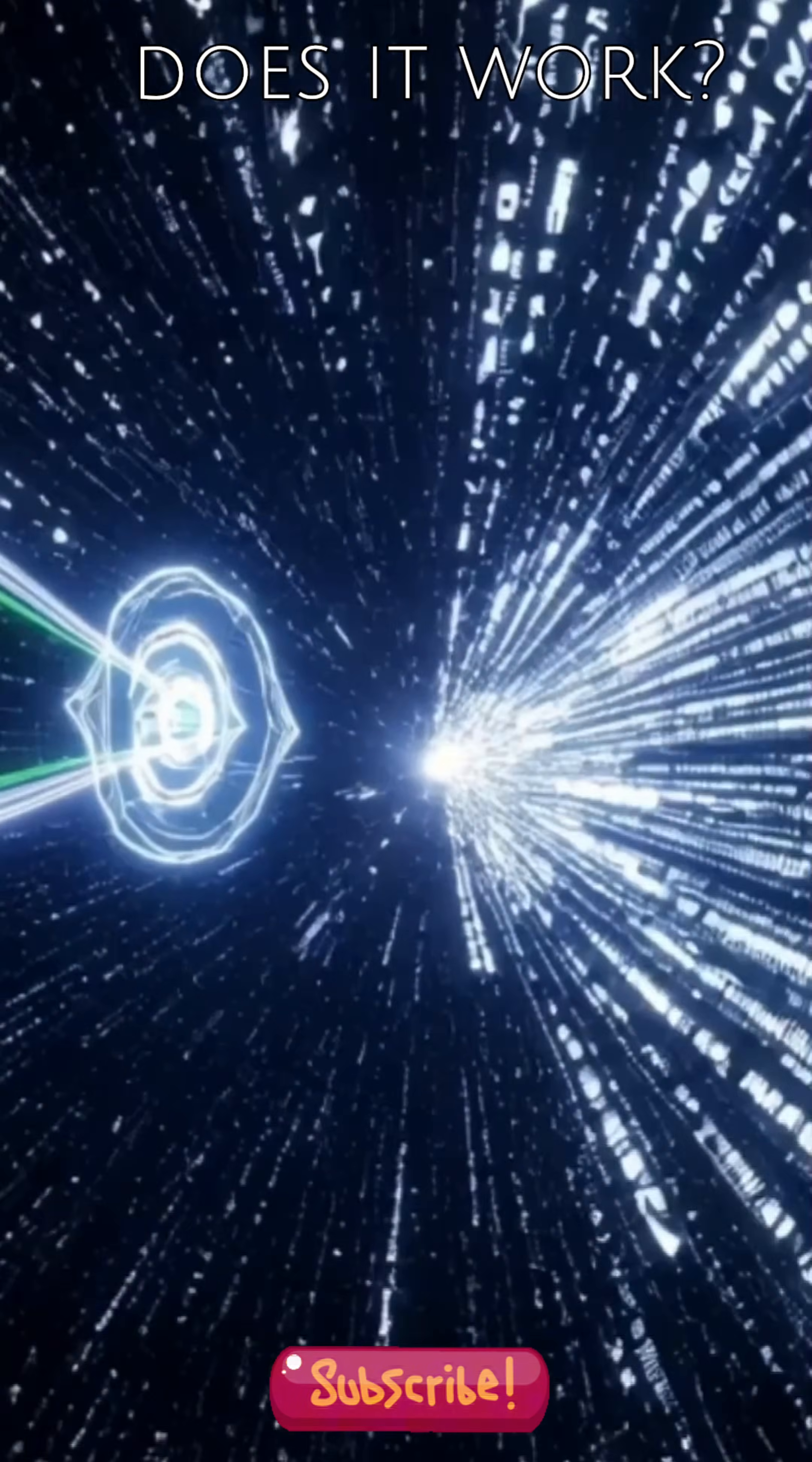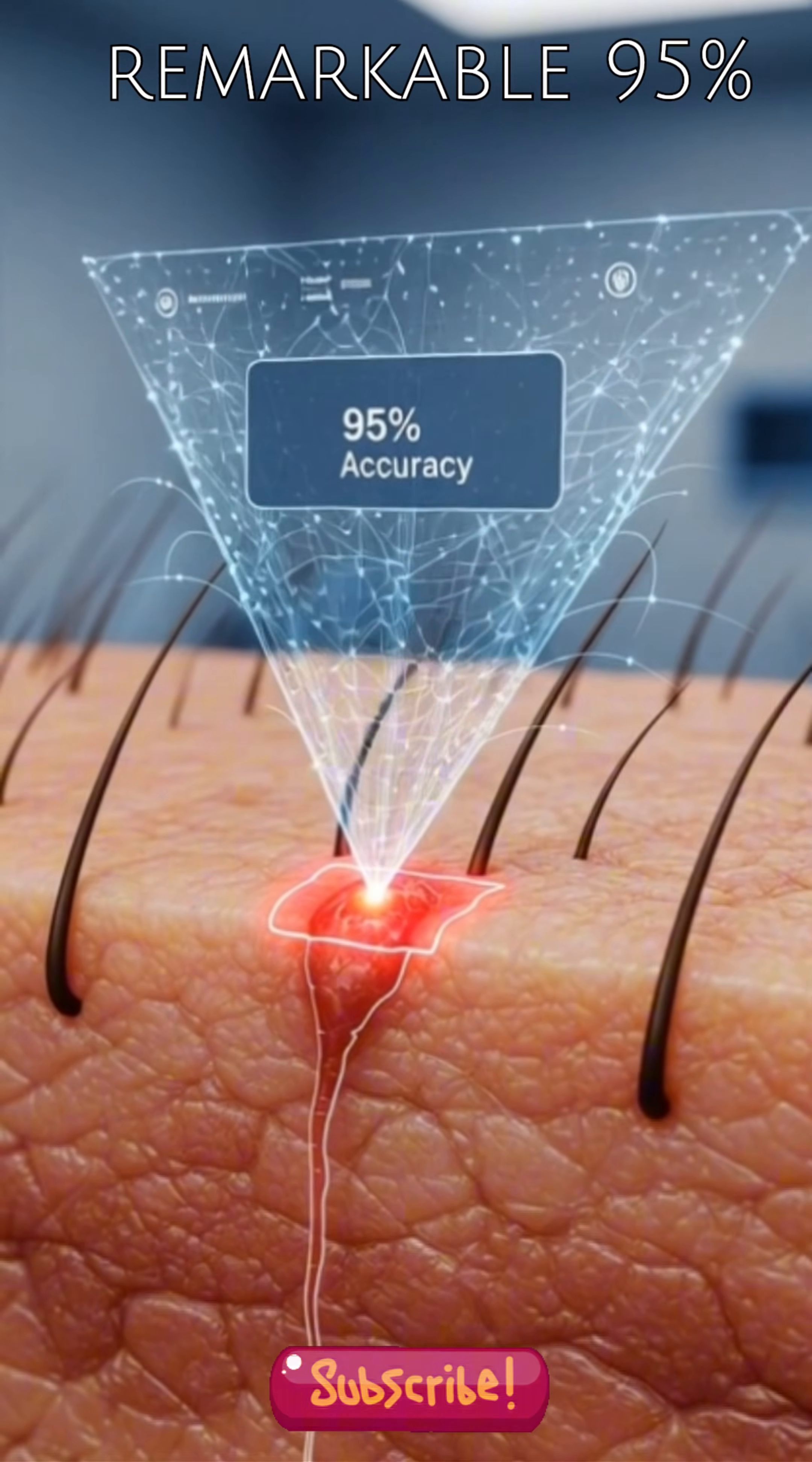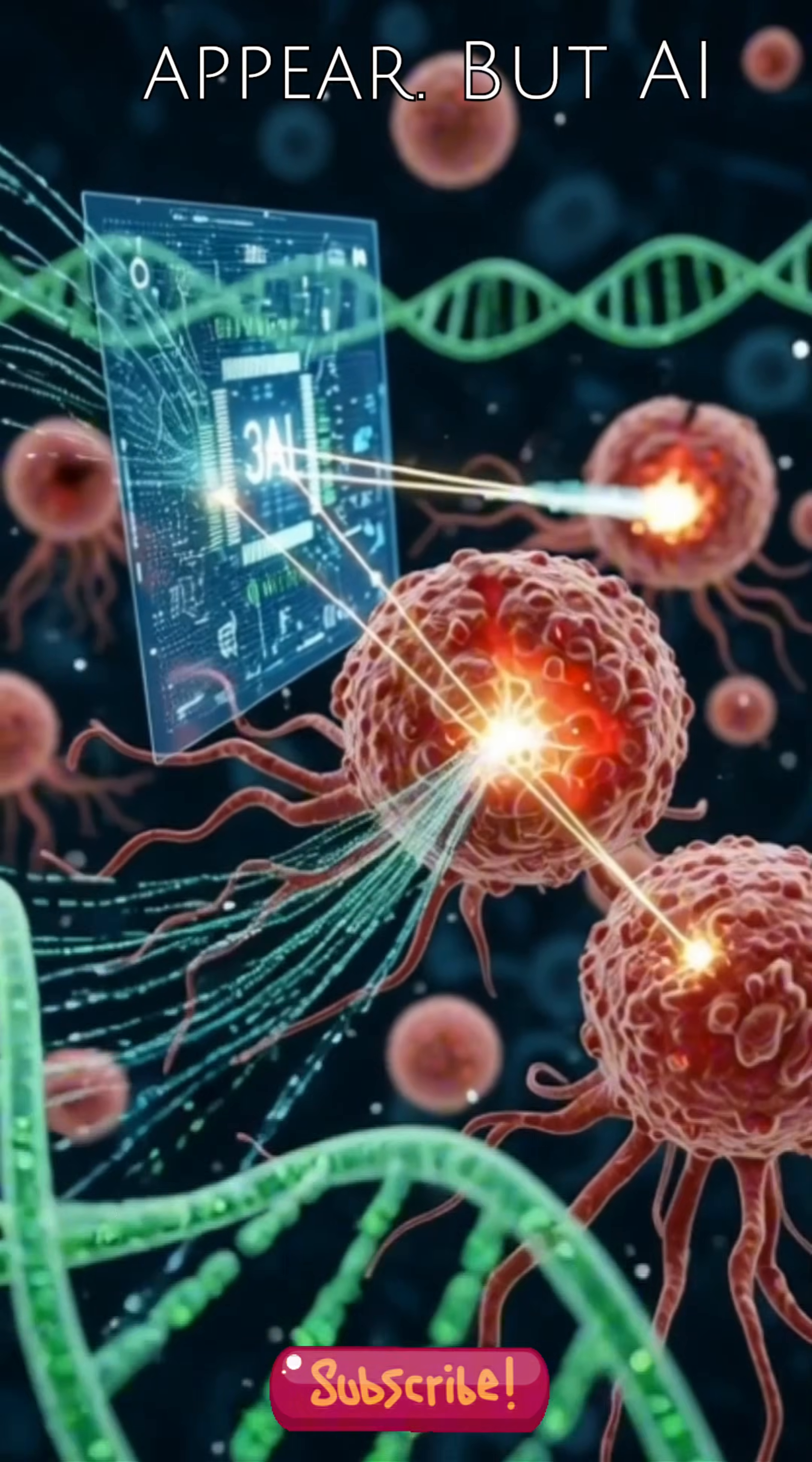How does it work? AI acts like a super-powered detective for your body. It sifts through unimaginable amounts of medical data, noticing tiny clues and patterns that even the most experienced human eye might miss. It diagnoses skin cancer with a remarkable 95% accuracy, surpassing human dermatologists, and can forecast the risk of type 2 diabetes five years in advance with 87% accuracy, allowing doctors to intervene proactively before symptoms even appear.